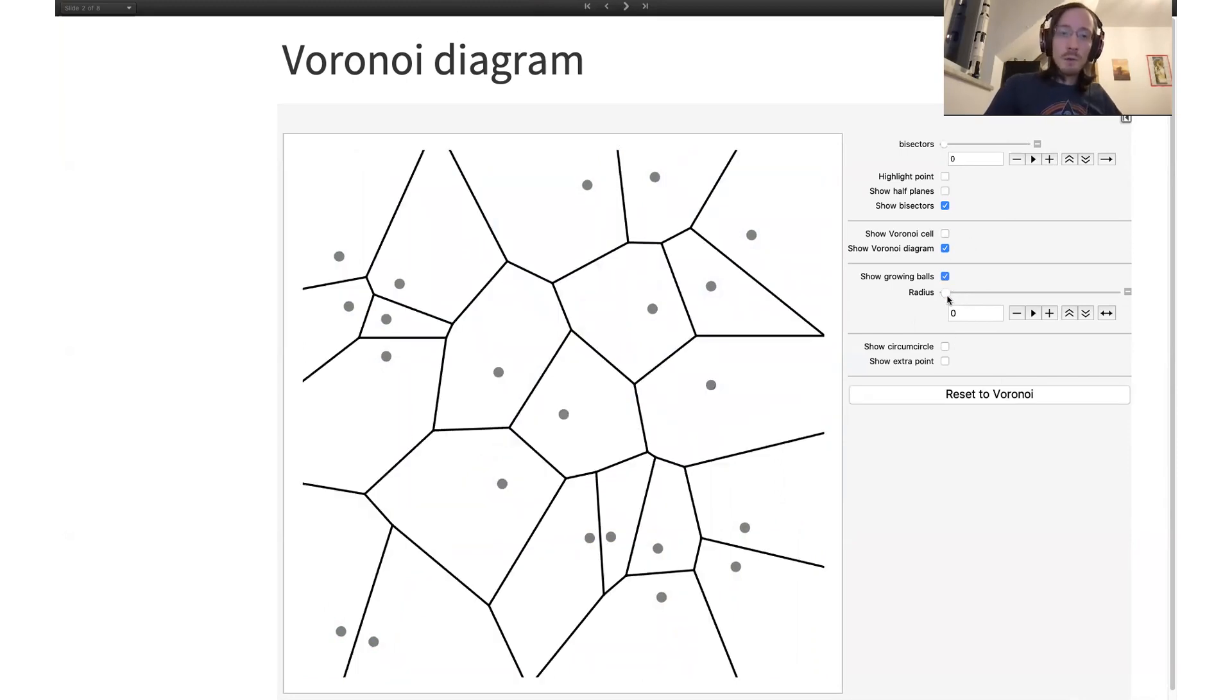Now I want to show you a third perspective on the Voronoi diagram, kind of dual to these growing disks from your data points. Imagine that instead of growing the disks from the data points, you grow it from this new point. And this is particularly interesting when you put the new point in the Voronoi vertex, because then at some radius you touch all three of those points at the same time. And this is something that you can use to characterize Voronoi vertices.